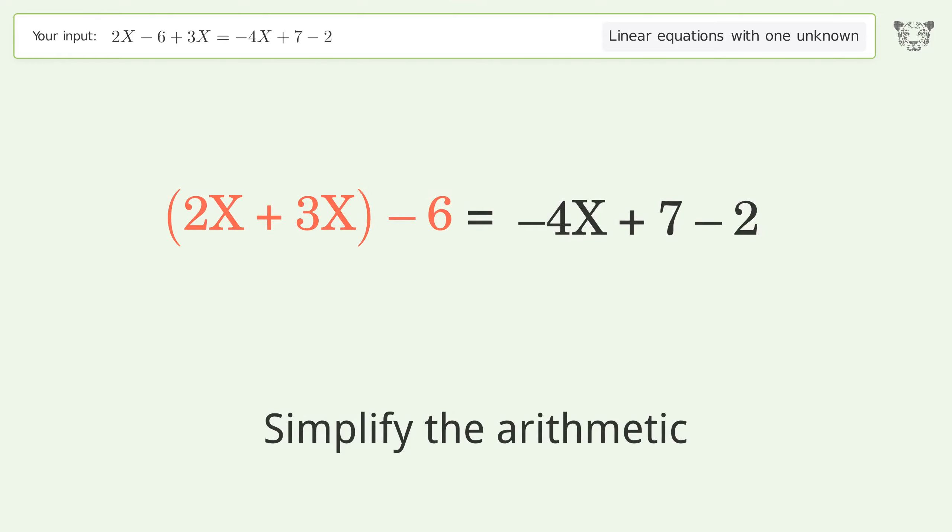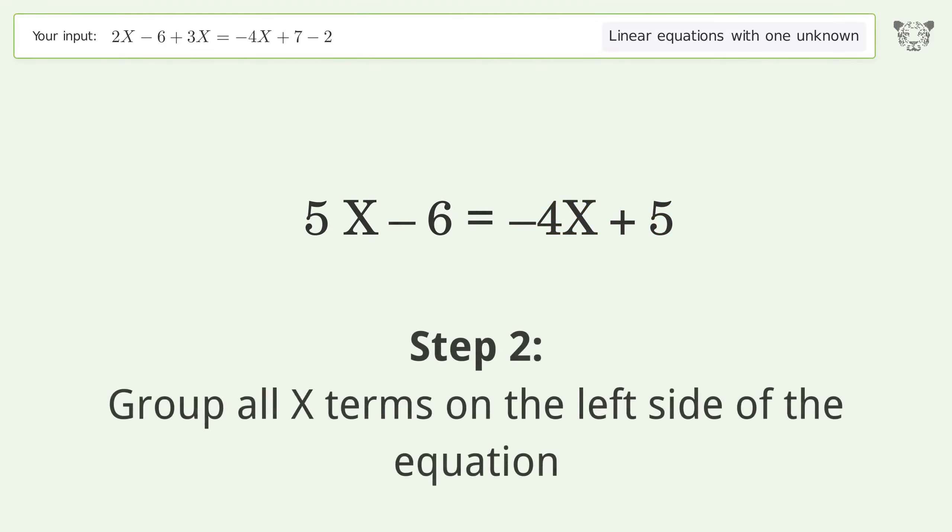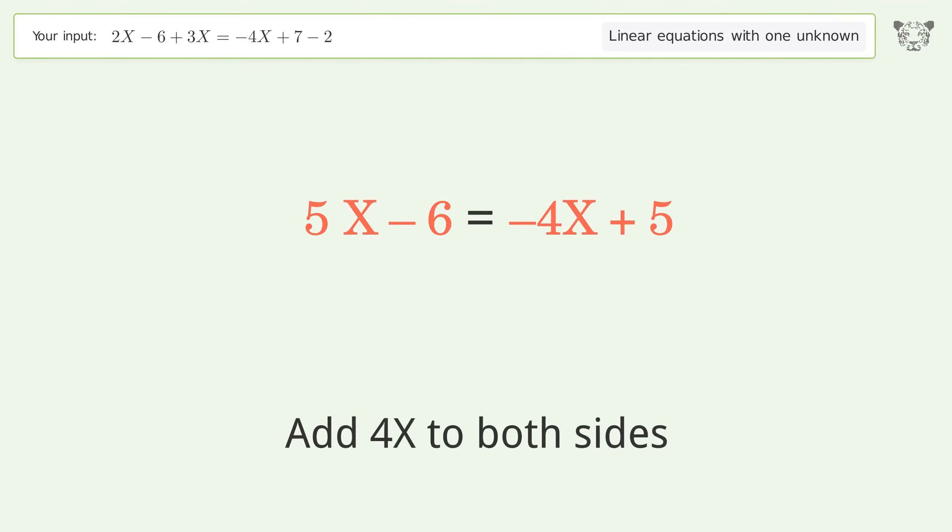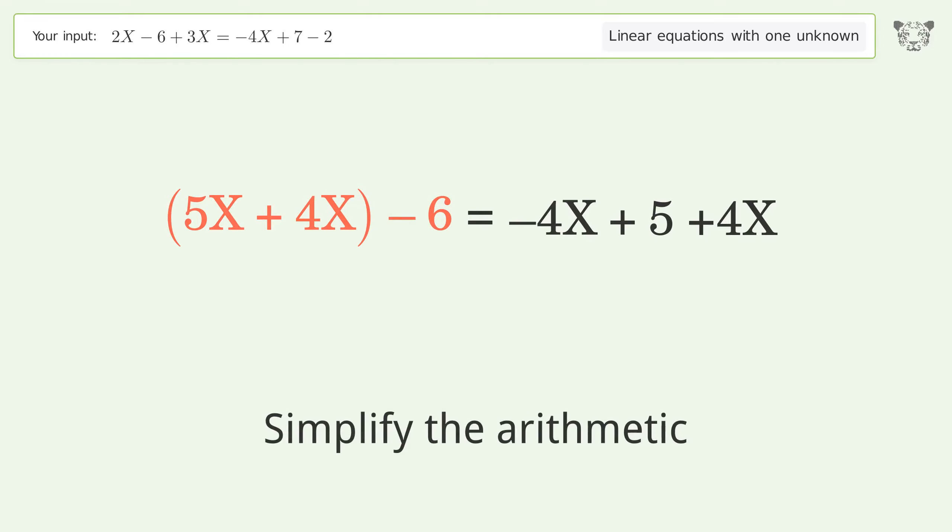Simplify the arithmetic. Group all X terms on the left side of the equation. Add 4X to both sides. Group like terms. Simplify the arithmetic.